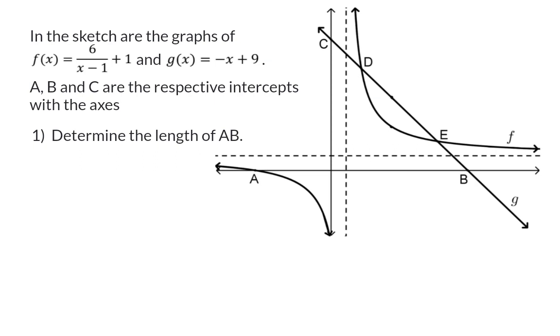The first question: determine the length of AB. When determining a length, you always need to check whether it is a horizontal or vertical distance. AB is a horizontal distance, which means that we need the x value at A and the x value at